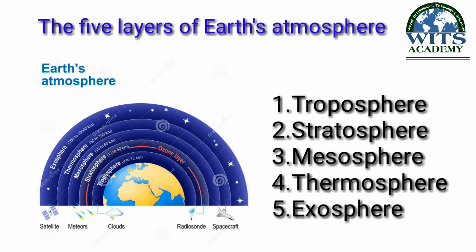Students, earth's atmosphere is divided into five layers. The first one is troposphere, the second one is stratosphere, the third one is mesosphere, the fourth one is thermosphere, and the fifth one is exosphere.